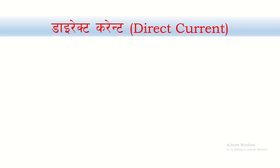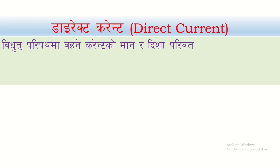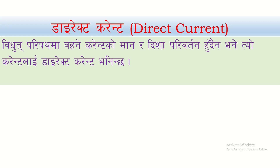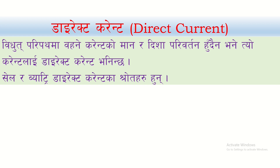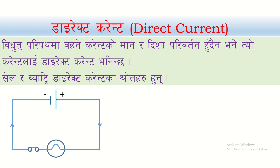This is a direct current, which means the current flows as a direct current. We are going to start with the cell and the battery for direct current. The current flows from the negative terminal of the cell. We can see this direction — the positive part and the negative part of the current are fixed.